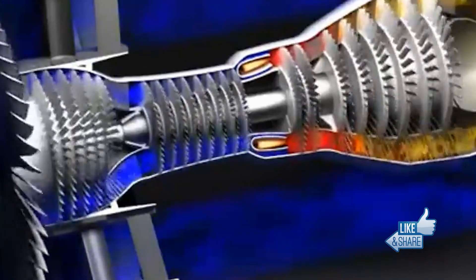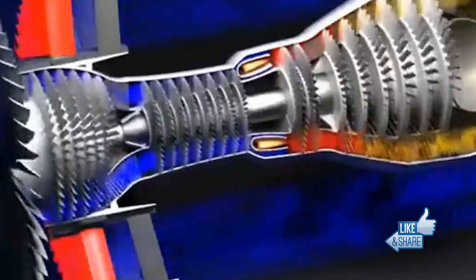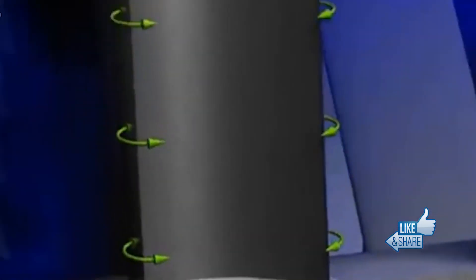As per a DRDO official, it is a non-afterburning turbofan engine with a thrust of 46kn and a maximum weight of 1,180kg.